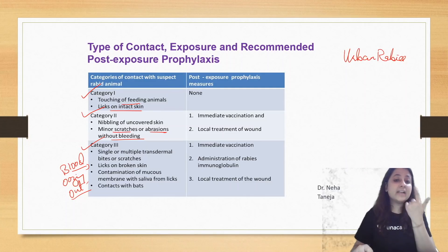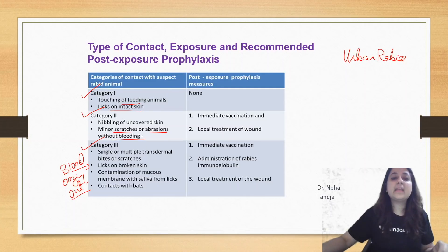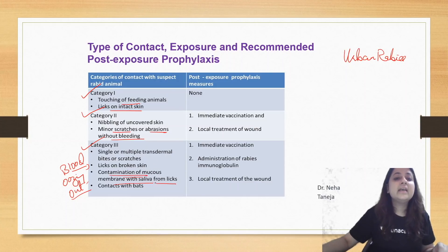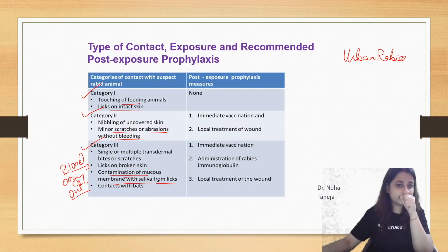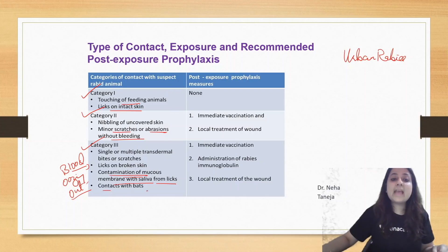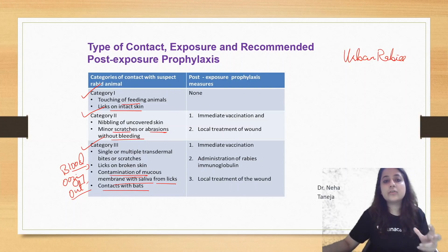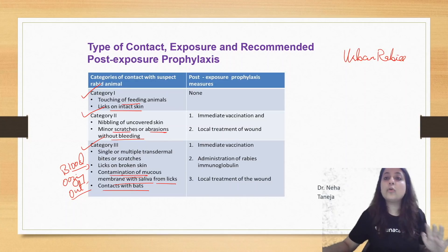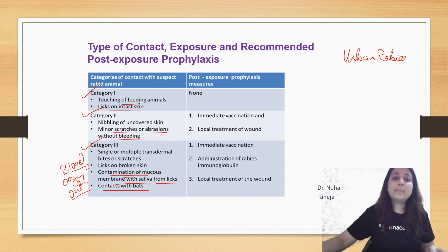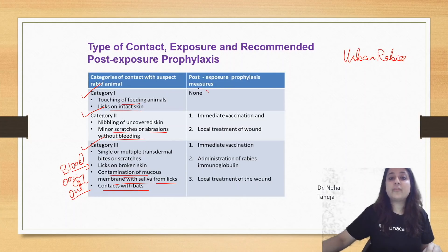Category three also includes a lick on broken skin — that is category three. A lick on intact skin is category one. Contamination of mucous membrane with saliva from licks is category three. If somebody has been bitten by a bat, that is also category three. Please remember, in India there is no bat rabies — it's only seen in America.